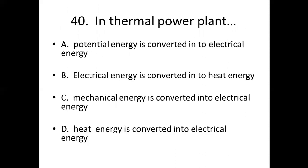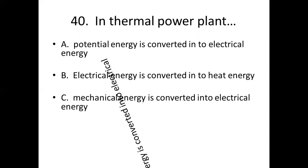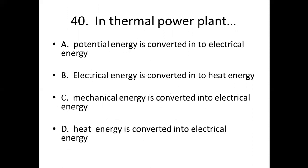40th bit: In a thermal power plant, dash. Option A: Potential energy is converted into electrical energy. Option B: Electrical energy is converted into heat energy. Option C: Mechanical energy is converted into electrical energy. Option D: Heat energy is converted into electrical energy. Answer — Option D: Heat energy is converted into electrical energy.